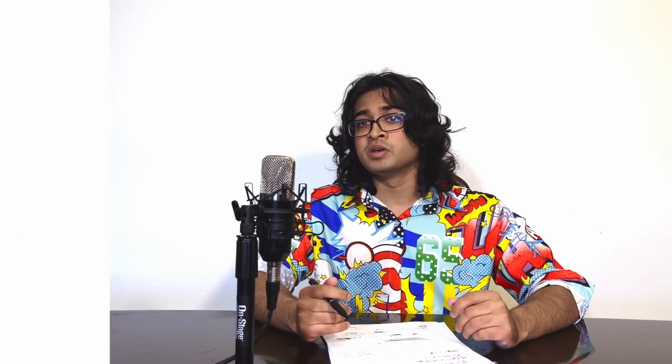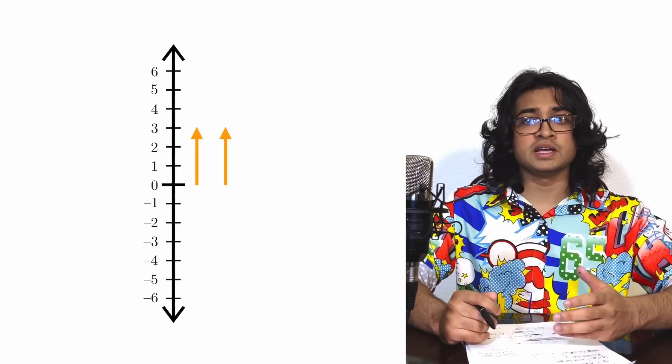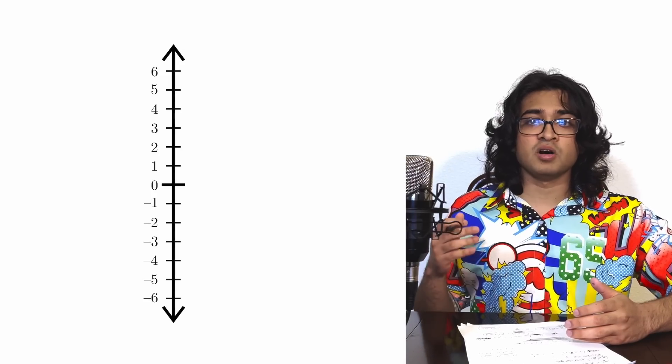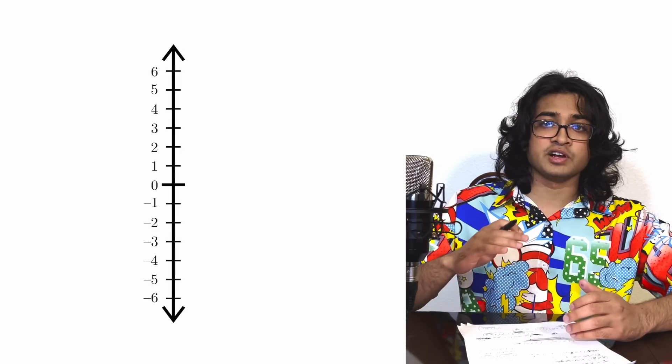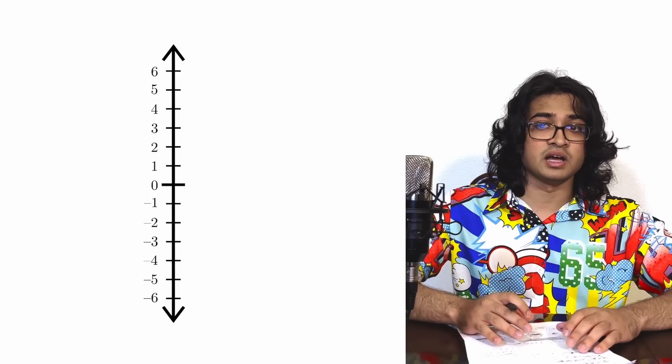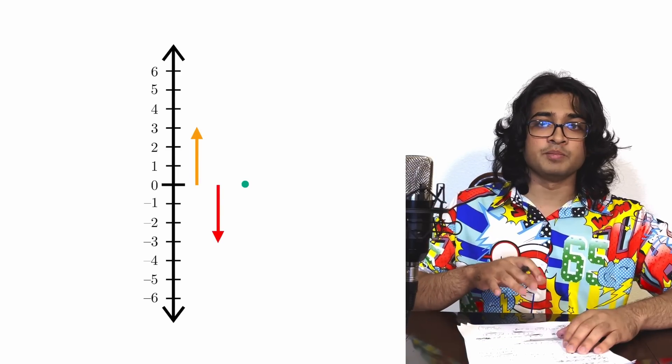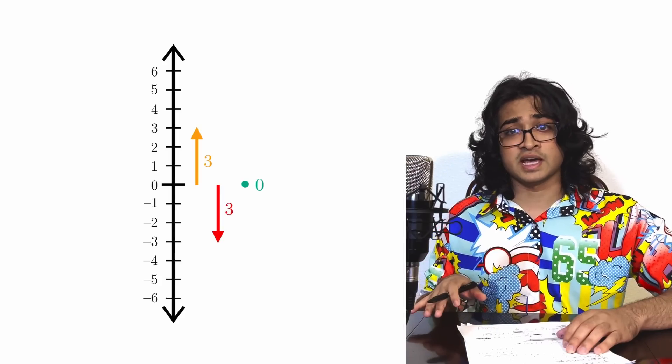Two real numbers with the same amplitude can constructively interfere if they have the same phase, that is, if they have the same sign. So for instance, 3 plus 3 gives you 6, their amplitudes have added. Real numbers can also destructively interfere if they're completely out of phase, that is, if they have opposite signs. So for instance, 3 plus negative 3 gives you zero. They both have the same amplitude, but it cancelled out.